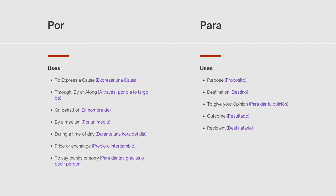The first thing you should know is that por has seven uses: to express a cause (expresar una causa); through, by, or along (a través de / a lo largo de); on behalf of (en nombre de); by a medium (por un medio); during a time of day (durante una hora del día); price or exchange (precio o intercambio); and to say thanks or sorry (para dar las gracias o pedir perdón).